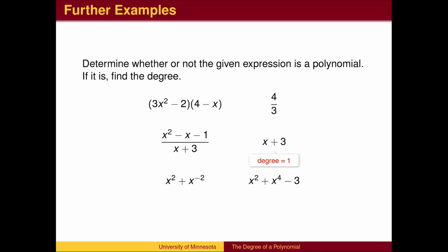x plus 3 is a polynomial. Since x equals x to the first, the degree is 1. The final expression is a polynomial of degree 4.